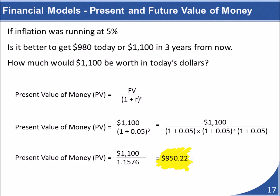Let's look at an example. Suppose inflation was running at 5%, and somebody offered to give you either $990 today or $1,100 three years from now. Which would you pick to maximize the money's buying power? Using the present value formula to convert the future money into today's dollars, we find that the $1,100 received three years from now would have the buying power of only $950 in today's dollars. So the best option is to take the $990 today.